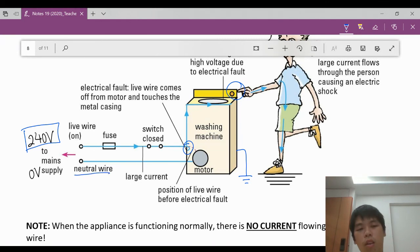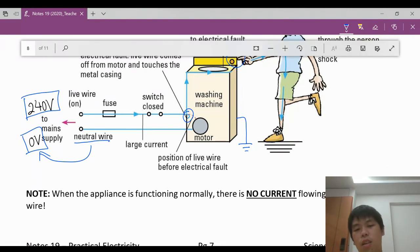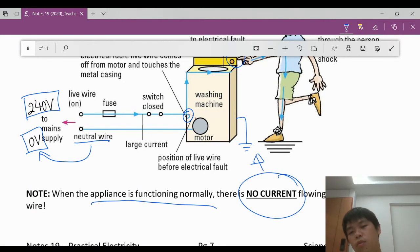Also take note that your live wire in Singapore usually has a potential of 240 volts. That is the potential when we draw from our live switches. The neutral wire, on the other hand, have zero volts. So electricity or electrical current always flows from a higher potential to a lower potential, 240 to zero. So that's why they are trying to say here, when the appliance is functioning normally, there is no current in this earth wire. No current in the earth wire if it's functioning properly. If there is, means the device may be faulty.